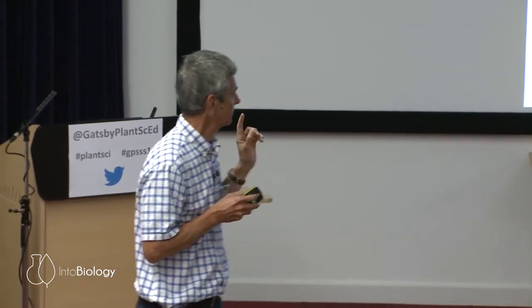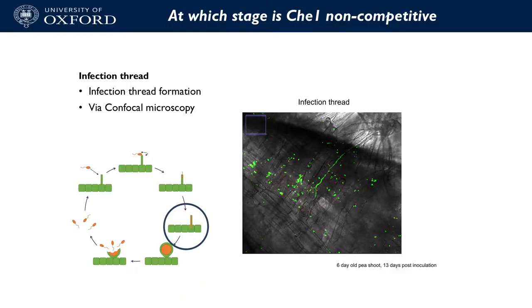The approach involves making mutants of the bacteria, labelling them, and using confocal microscopy to understand which stage is affected. This is an infection thread — the bacteria growing down it, labelled with GFP and mCherry, comparing wild type and mutants. The temporal and spatial basis of these steps is a key element of plant-microbe interactions that hasn't been investigated properly yet. When is a particular process crucial? These techniques are becoming available now and will play a big role going forward.